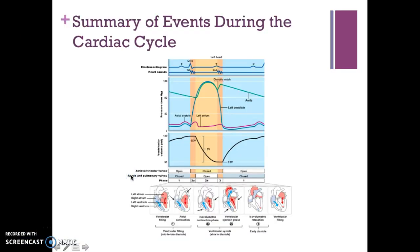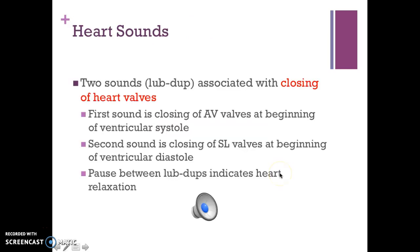Welcome back — this is heart physiology part 4. We just finished up the summary of the cardiac cycle. There are two sounds, lub and dub, which are associated with the closing of the heart valves. Lub is the closing of the AV valves at the beginning of ventricular systole. The dub sound is the closing of the semilunar valves at the beginning of ventricular diastole. The pause between lub-dubs indicates heart relaxation.